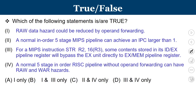Let us now move to the next question. Here 4 statements are given, and we must determine which are true. Statement 1: RAW data hazard could be reduced by operand forwarding. Statement 2: A normal in-order 5-stage MIPS pipeline can achieve an IPC larger than 1. Statement 3: For the MIPS store instruction 'store R2, 16(R3)', some contents stored in the ID/EX pipeline register will bypass the EX unit directly to the EX/MEM pipeline register. Statement 4: A normal 5-stage in-order RISC pipeline without operand forwarding can have RAW and WAR hazards.